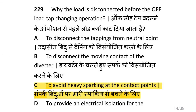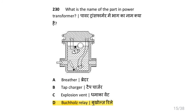The load is disconnected before the off-load tap changing operation because it avoids heavy sparking at the contact point. What is the name of the protection part in a power transformer? That is Buchholz's relay.